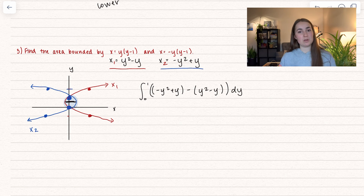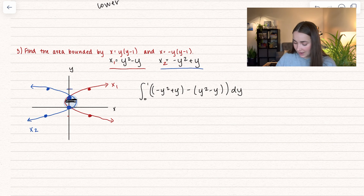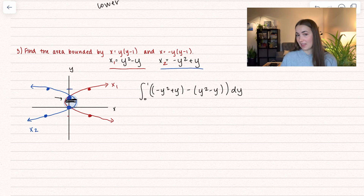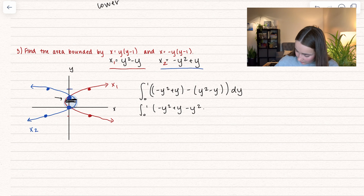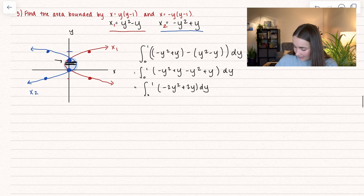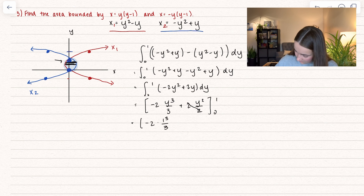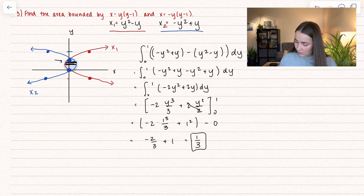Why do we use right minus left? Same reason as upper minus lower — we take the right height and subtract the left height to get the full area. The right side is negative because it's below the y-axis and we're integrating in terms of y. Subtracting a negative adds that area. Simplifying: −y² + y − y² + y = −2y² + 2y. The antiderivative is −2y³/3 + y², evaluated from 0 to 1, giving an area of 1/3.